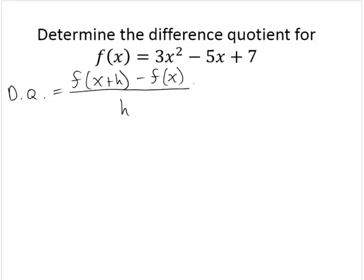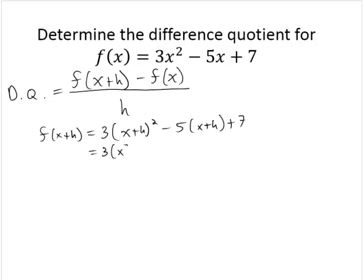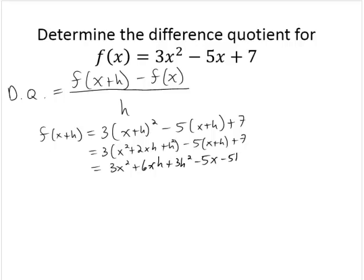Now, f(x+h) would be 3(x+h)² - 5(x+h) + 7. Since (x+h)² = x² + 2xh + h², distributing yields 3x² + 6xh + 3h² - 5x - 5h + 7.